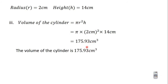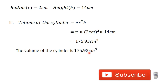The volume of the cylinder is 175.93 cm³. Thank you for watching this video. Subscribe to this channel for more videos. In the next video we are going to learn how to find the total surface area, curved surface area, and volume of a cylinder with both ends open. Bye bye.